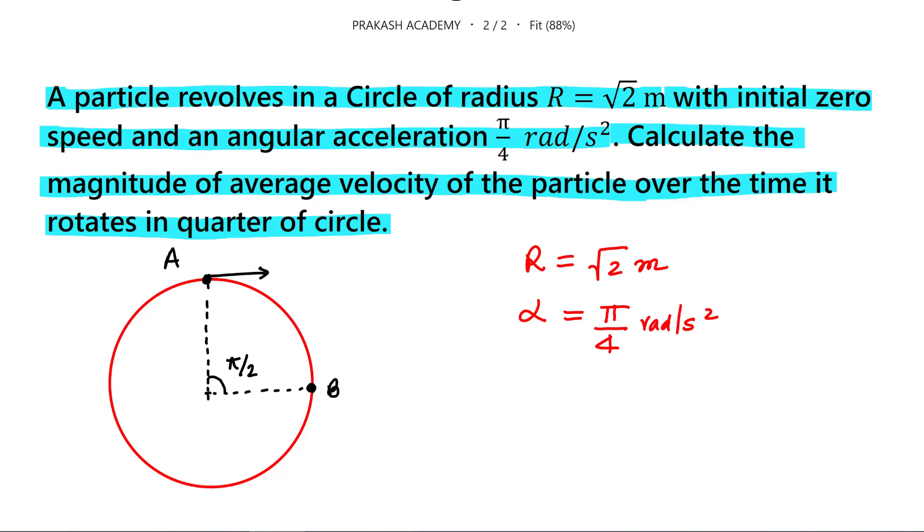And the initial speed is also given, that is 0. But it has an angular acceleration, and that is alpha, which equals pi by 4 radian per second square.